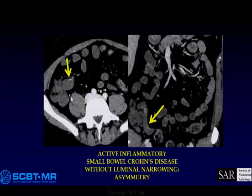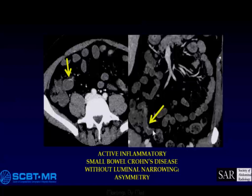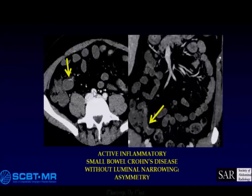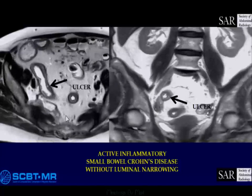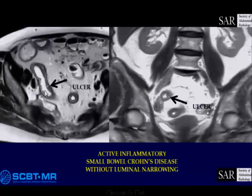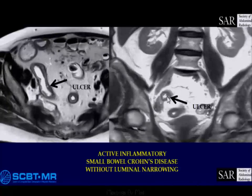Here is an example of asymmetric change. We can see it along the mesenteric border, not along the anti-mesenteric border — a little bit of wall thickening, a little bit of hyperenhancement. Here we are in MR: T2 bright, and there's actually an ulcer. Notice the asymmetry — more ulceration on one side than the other. And here it is again with a little ulcer on each side.